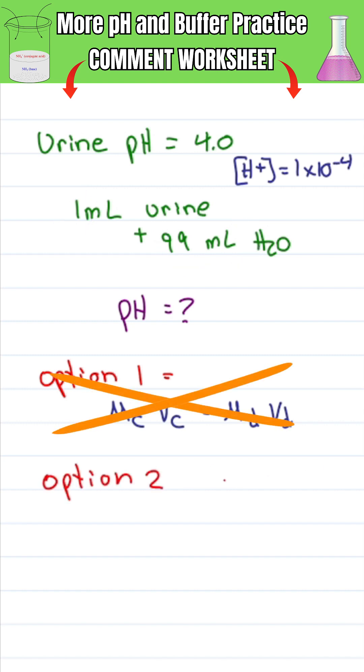Option two is less math, more logic. If every pH unit is a change in concentration of 10, and we are taking one drop of pH 4 and diluting it to a hundredth of the initial concentration, I expect my new pH to be more dilute by 2 units, meaning it goes up by 2 for a new pH of 6.